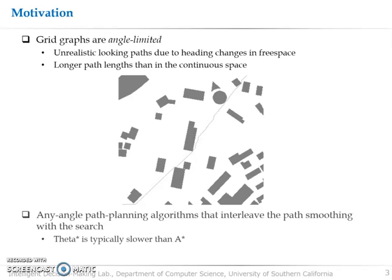Our work is mostly motivated by that grid graphs are angle limited, where the agent is only allowed to move in a fixed number of directions. So the resulting paths usually have unrealistic looking due to unnecessary heading changes in free space. As a result, path length is often longer than the ones in a continuous space.